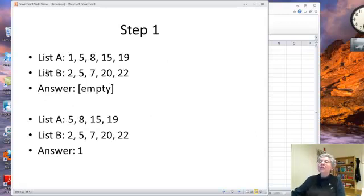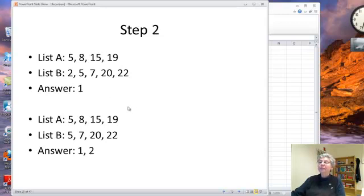So let's see here how it works. Here's our starting point, list A and list B, and the answer is empty. And if we compare, 1 is smaller than 2, so we put the 1 in the answer, leaving the remainder of list A to be looked at. List B remains the same. The second time, we'll pick the 2 out of list B because it's smaller than 5, and put it in the answer. Now we have two 5s. We just arbitrarily pick one, so we'll pick the one from list A.